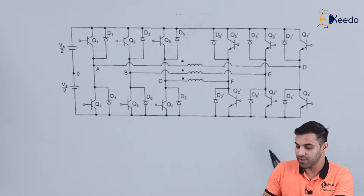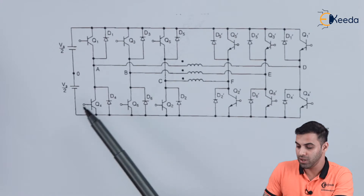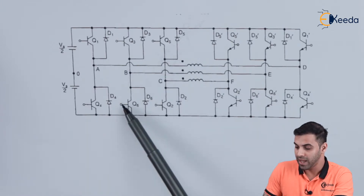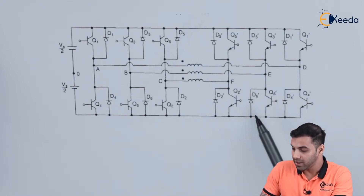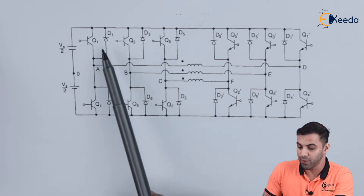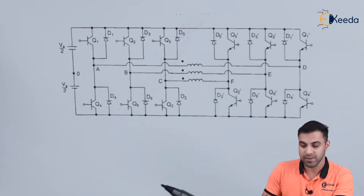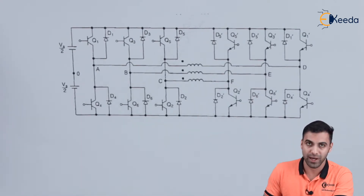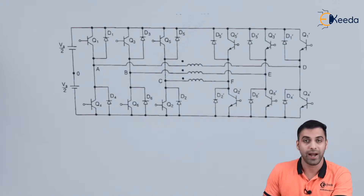As per this figure, I have connected several transistors: Q1, Q2, Q3, Q4, Q5, and Q6 on one side, and Q1', Q2', Q3', Q4', Q5', and Q6' on the other side. In parallel to each transistor, I have connected diodes D1 to D6 and D1' to D6'. These diodes are called freewheeling diodes. This freewheeling or flyback diode is needed so that it discharges the inductor current while discharging.